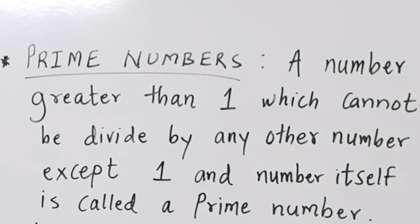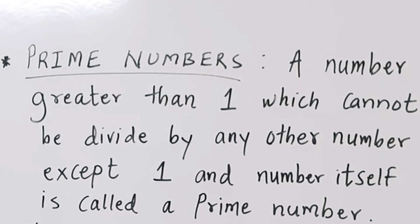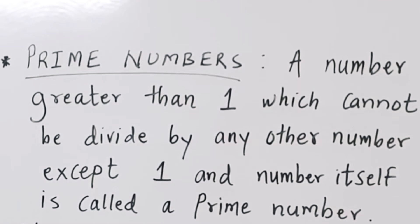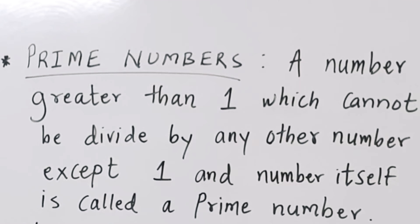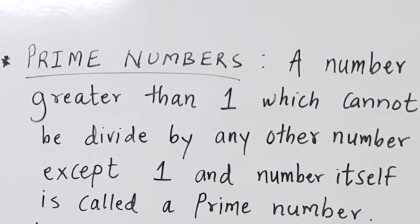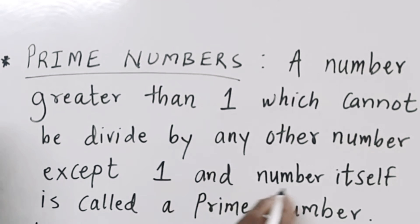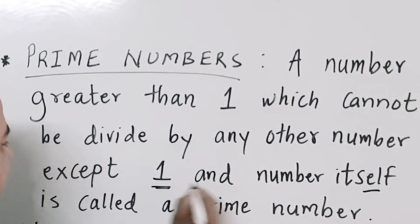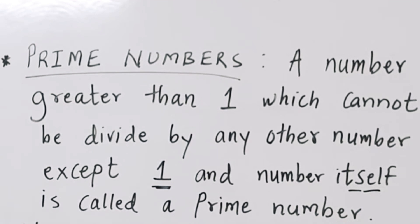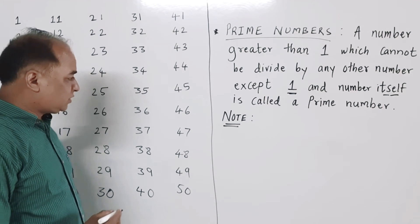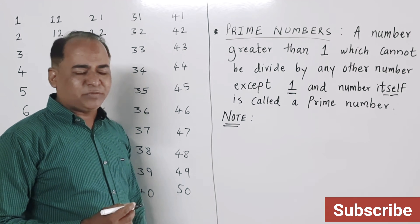Prime numbers: a number greater than 1 which cannot be divided by any other number except 1 and the number itself is called a prime number. In other words, a number whose only factors are 1 and the number itself is called a prime number. We will now find the prime numbers between 1 and 50.